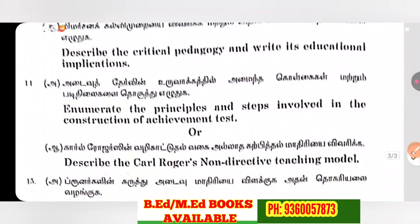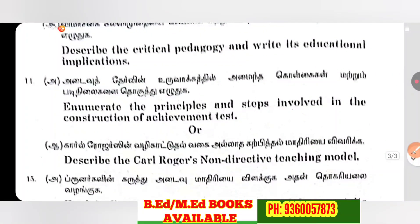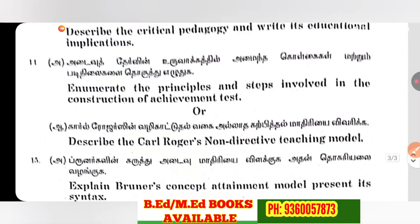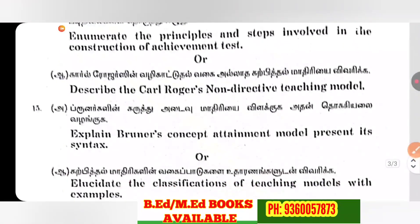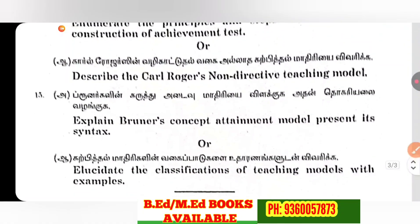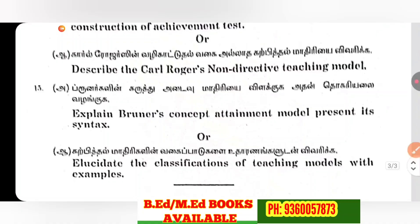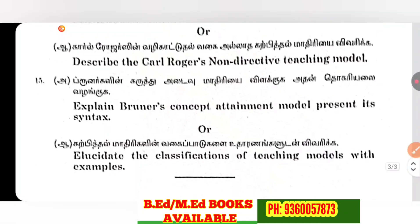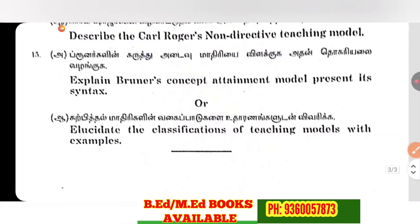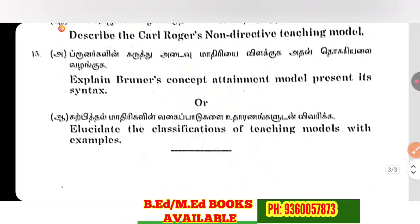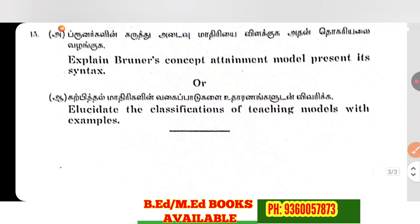Fourteenth: enumerate the principles and steps involved in the construction of an achievement test. Or alternatively, describe the call towards non-directive teaching model. Fifteenth: explain Bruner's concept attainment model with presence and text. Or alternatively, illustrate the classification of teaching models with examples.